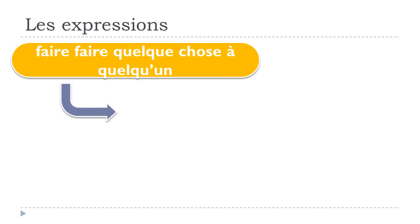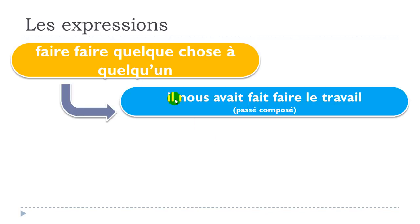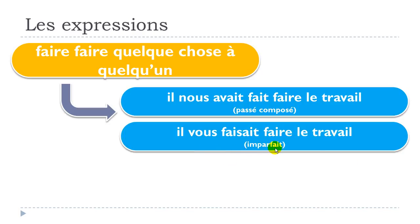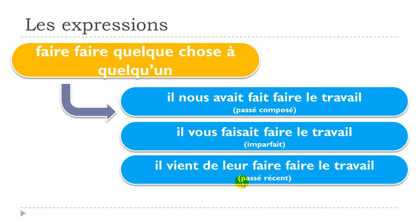For past tenses: in the plus-que-parfait with the first person plural 'nous': 'il nous avait fait faire le travail.' In the imparfait with the second person plural 'vous': 'il vous faisait faire le travail.' And for the passé récent with the third person plural masculine, the pronoun is 'leur': 'il vient de leur faire faire le travail.'